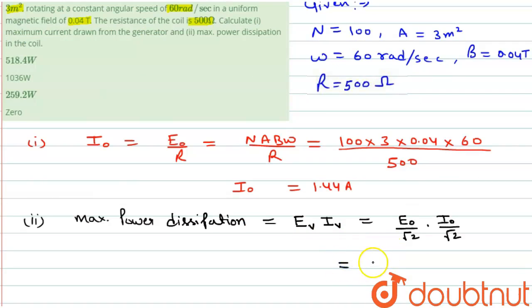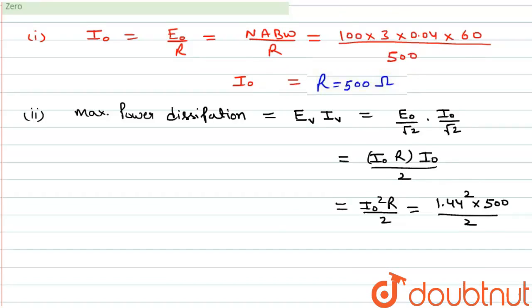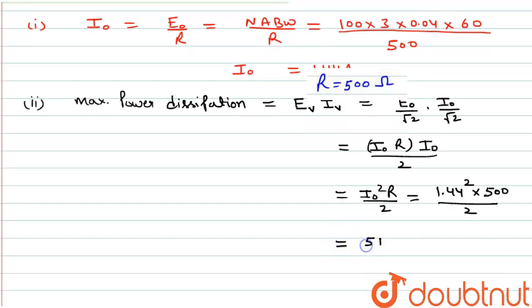As we know that E₀ is equal to I₀ times R, we can write it as I₀ square R divided by 2. So we can put the values: I₀ is 1.44 square, R is 500, divided by 2. After simplification we will get 518.4 watts.